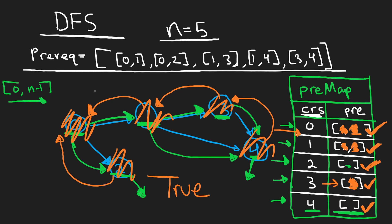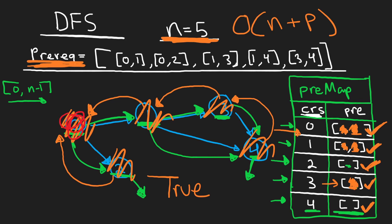The time complexity is O(N + P), where N is the number of nodes and P is the number of prerequisites. We visit every node and traverse every edge, but once we know a course can be completed, we don't have to visit it twice — we can return true immediately without repeating the work.